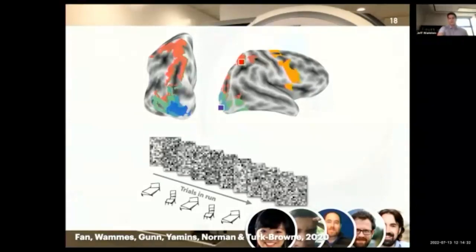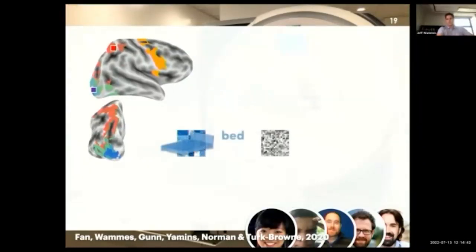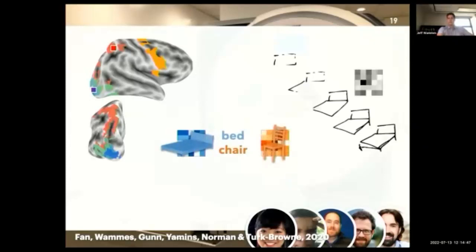So we get one of these for every trial. So people are alternating between drawing a chair and a bed. And we can train a classifier to distinguish whether each one of these templates is from a trial that was drawing a bed or a chair. So we have these templates—this one's characteristic of bed, this one chair. We get a new trial that's been held out from the model, and we can determine the extent to which that template is more like a bed or more like a chair.